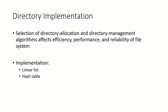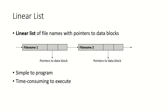In our previous video we saw the different types of directory structures. The selection of directory allocation and directory management algorithms will affect the efficiency, performance, and reliability of the file system. In this video we are going to discuss how the directory is implemented, taking examples of two data structures: one using a linear list and another using a hash table.